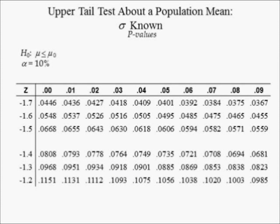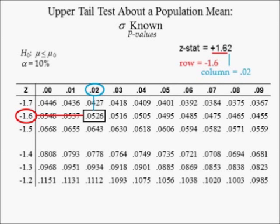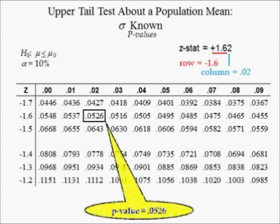Suppose a sample of data generates a Z-stat equal to 1.62. The value in row negative 1.6 and column 0.02 is 0.0526. Because the standard normal distribution is symmetric, the probability that Z is greater than or equal to a Z-stat of 1.62 is equal to 0.0526. Hence, the P-value is 0.0526.